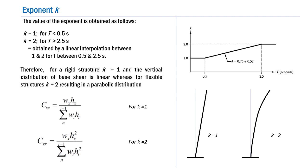Considering two extremes: for a rigid structure, T is less than 0.5 seconds, so K equals 1. When K equals 1, the expression for CVX reduces to CVX equals WX times HX divided by the summation of WI times HI, for I varying from 1 to N. This means that for rigid structures, the distribution factor is directly proportional to height HX — in other words, we have a linear distribution of the total base shear V, proportional to HX, as shown in the sketch for K equals 1.